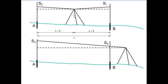Now, if a level having collimation error is placed at the center between two staffs — at distance l/2 and l/2 — the same angular error will be introduced equally on both staff readings. The difference between readings S1 and S2 will give you the correct difference in elevation even though there is a collimation error. This is the beauty of placing the instrument at the center of two staffs, and therefore we always place the leveling instrument at the center so that collimation error is automatically compensated.